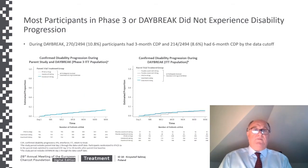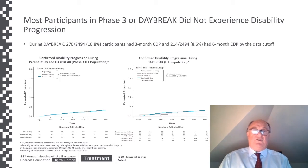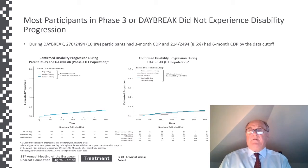For most participants in phase 3 or Daybreak, disability progression was not experienced. During Daybreak, a little less than 11% of patients had three-month confirmed disability progression, and a little less than 9% had six-month confirmed disability progression by the data cutoff.